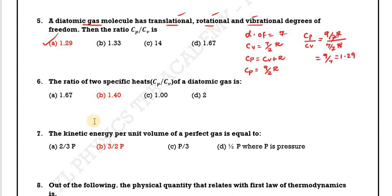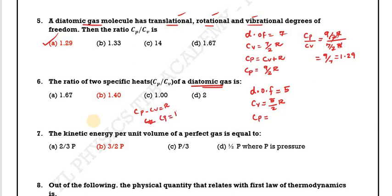Question 6: The ratio of two specific heats cp by cv for a diatomic gas. We know cp minus cv equals R. For a diatomic gas at normal temperature, cv equals 5/2 R and cp equals 7/2 R. Therefore cp by cv equals (7/2 R) divided by (5/2 R), giving 7/5.